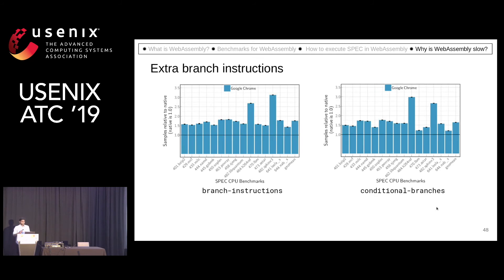The other counters we are looking at are branch instructions and conditional branch instructions. We can see that WebAssembly executes in geomean around 1.5x to 1.75x more branch instructions and conditional branch instructions.